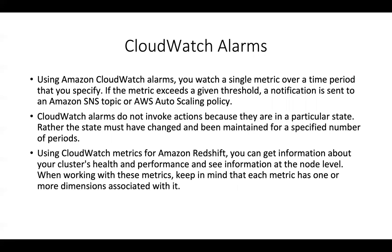Redshift also supports CloudWatch alarms. You can specify a single metric over a time period to monitor and specify a specific threshold. Once the threshold is breached, you can send a notification using an SNS topic or trigger auto scaling. CloudWatch alarms do not invoke actions just because they are in a particular state - rather, the state must have changed to trigger your alarms. CloudWatch metrics for Redshift give you information about cluster health and performance at each node level.